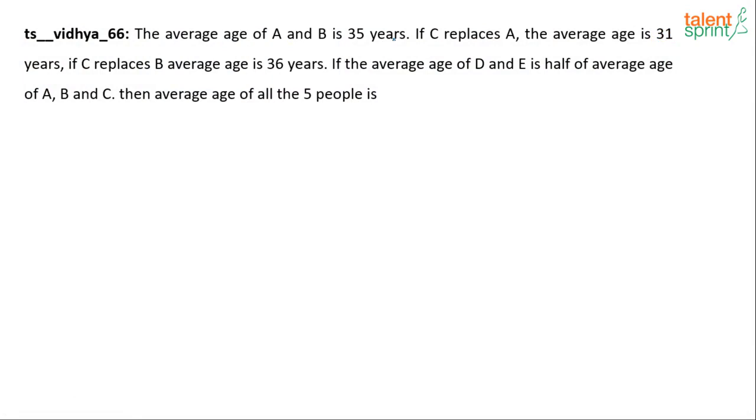The average age of A and B is 35 years. So can I say A plus B equals to 70? Yes. If C replaces A, the average age is 31 years. C replaces A meaning in place of A, we should have C. So then C and B, you're able to follow. Original average is A and B, the average is 35 years. So sum will be 70 years. If C replaces A, so in place of A, you have C. C plus B, then the average is 31. If average is 31, sum would be 62.